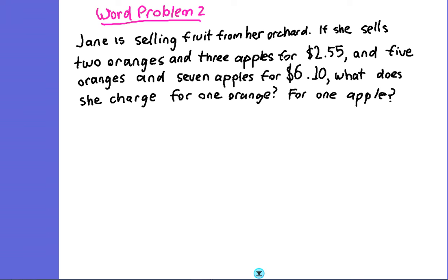So on the screen we have a problem about Jane who's selling fruit from her orchard. The question is, if she sells two oranges and three apples for $2.55, and five oranges and seven apples for $6.10, what does she charge for one orange and for one apple?